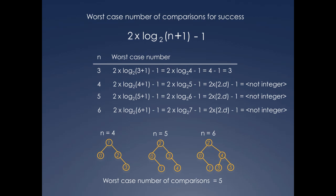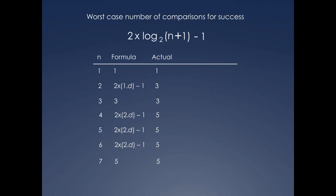So, a pattern is emerging. In the table, the second column lists the values obtained by plugging n into the formula, while the last column lists the expected values as evidenced by the comparison tree. The question is, how can we correct the formula? Observe that in the case of n equals 2, we want the 1.d to be bumped up to 2, so that 2 times 2 minus 1 would give us the expected result of 3. Similarly, for n equals 4, 5, and 6, we want the multiplier to be bumped up to 3, so that we get the expected result of 5.